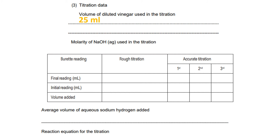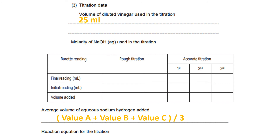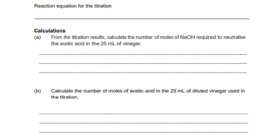They can give you a table where you record the burette reading — rough titration, accurate titration — and then find the average volume of aqueous sodium hydroxide added. This will be the average of the accurate titration values: value 1 plus value 2 plus value 3, divided by 3, because you have repeated this experiment 3 times.